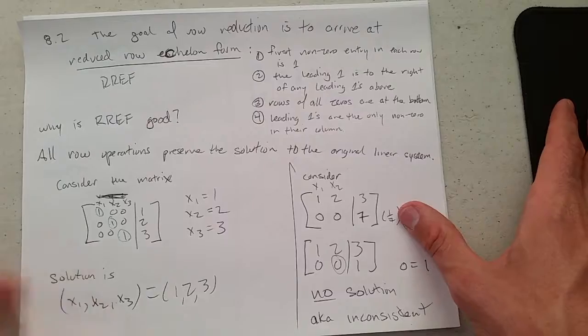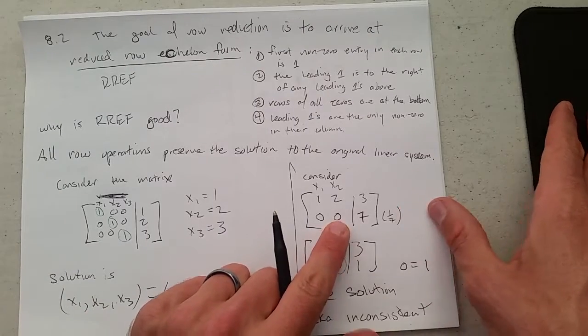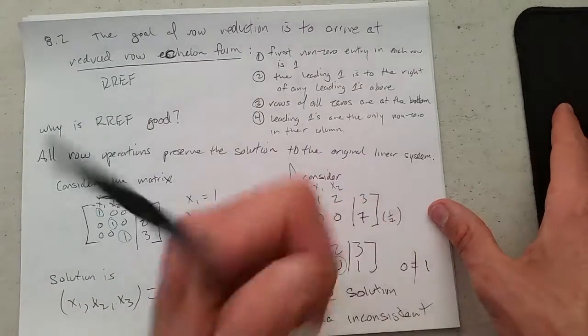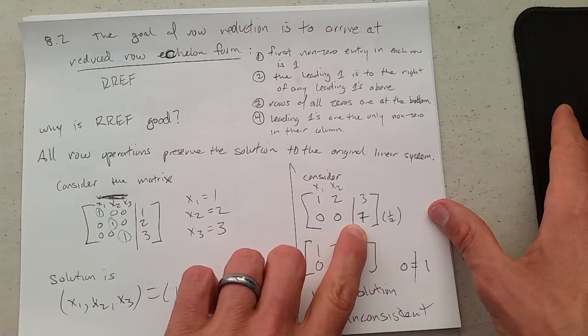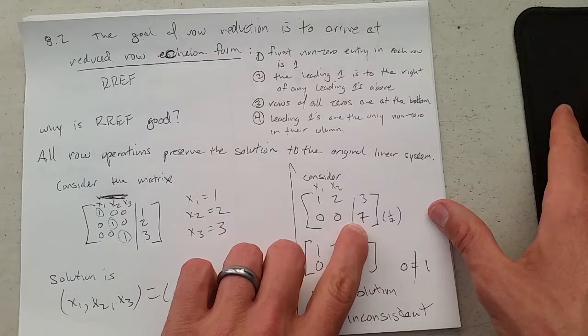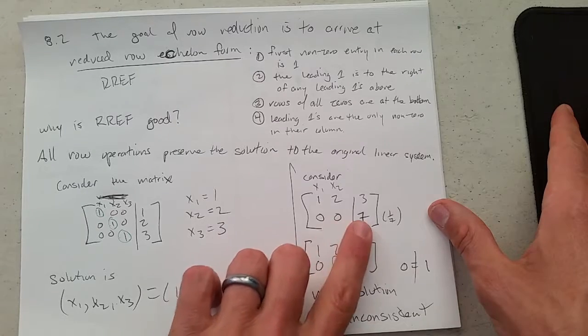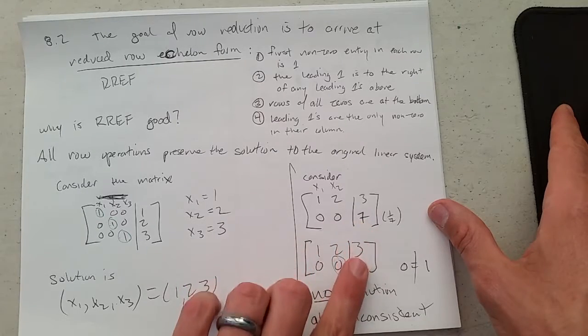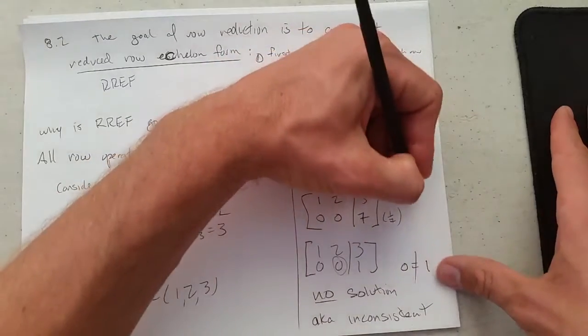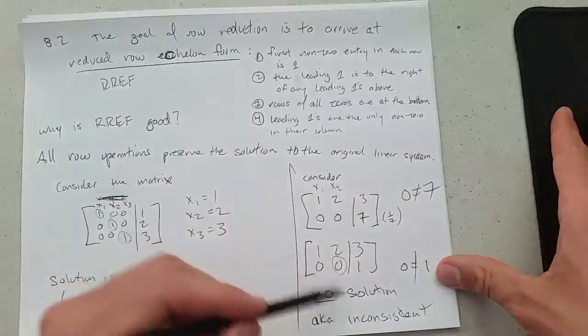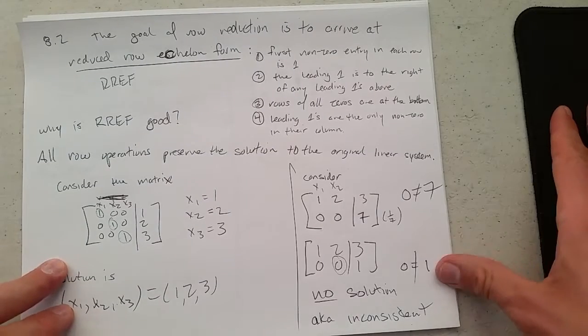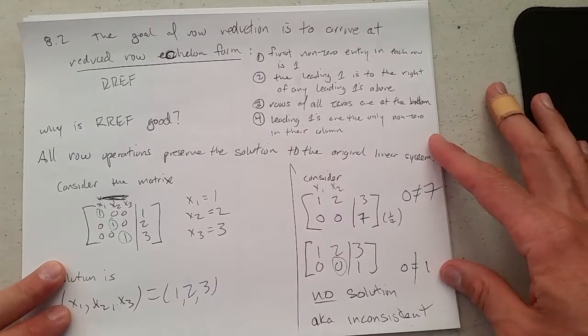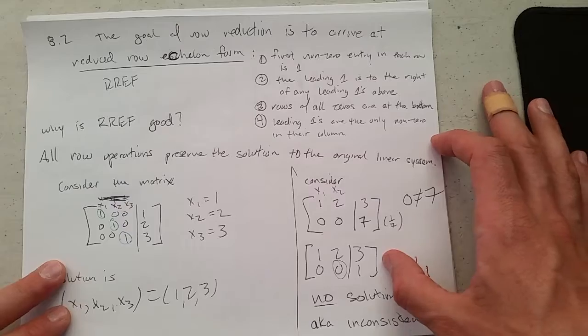So this would be an inconsistent system. You could tell right here, if I wrote down the equation, I would get 0 equals 7. Obviously not true. So 0 also does not equal 1. You can see inconsistency pretty early on in your row reduction. So if you see inconsistency, you do not have to go any further. I could have written down 0 not equal to 7, skipped all this, and written no solution, inconsistent. So this would be inconsistent, although it is still in row-reduced echelon form.